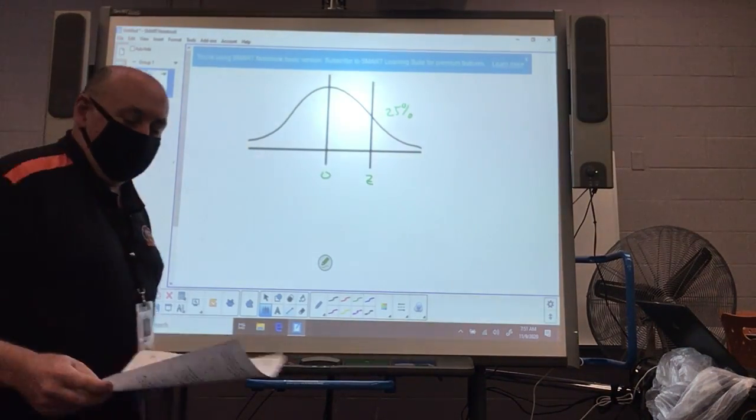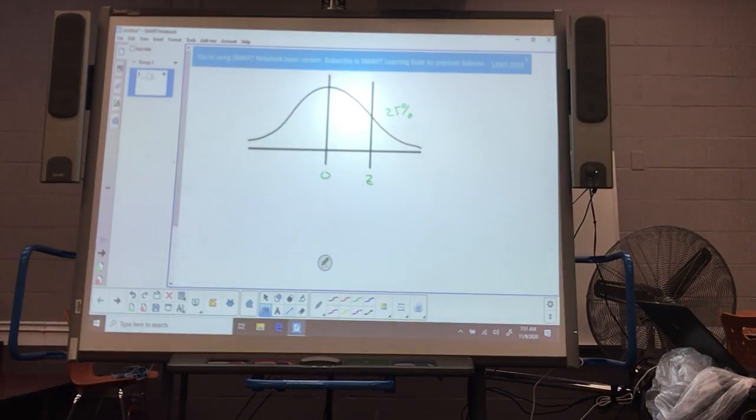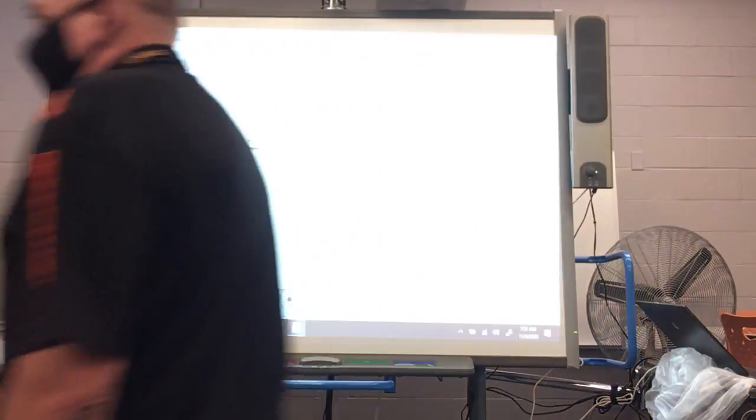All right, once again, problem number four. We are trying to find the probability or the z-score so that 25 percent of the data lies close to the right of the z-score. So I do my bell-shaped curve, I do my 25 percent of my data goes to the right of that.